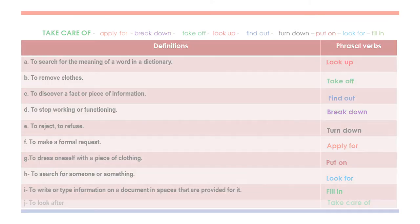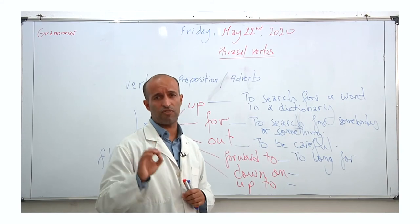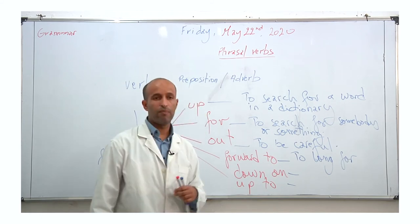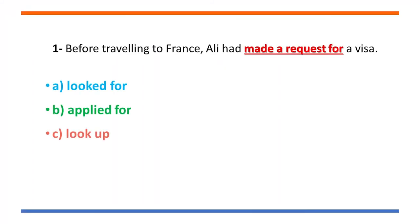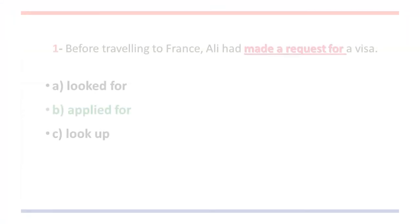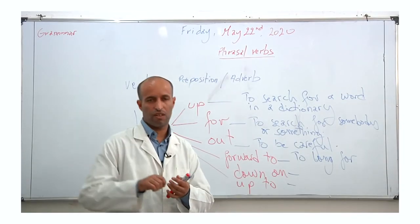Next exercise: underline the words with the correct phrasal verbs. You have sentences with choices — choose the correct phrasal verb to replace the underlined words. Number one: before traveling to France, Ali had made a request for a visa. The answer is B — 'applied for.' Before traveling to France, Ali had applied for a visa. He wrote an application for the visa.